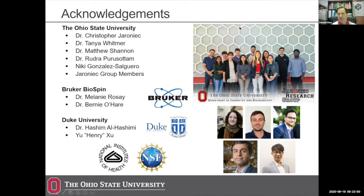Thank you so much, Dan, for this very interesting presentation. It's amazing what you can do when you hook a gyrotron up to an NMR — the days of looking at solid-state NMR as just a bunch of blobs is long over. The resolution from these two-dimensional spectra is amazing. We have a question: is there a strong possibility that the polarizing agent itself will bias the nucleotides to one form of base pairing over another?